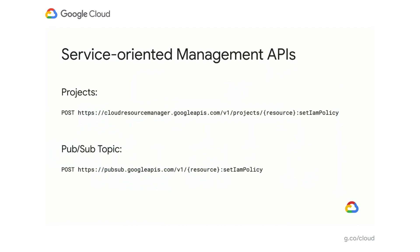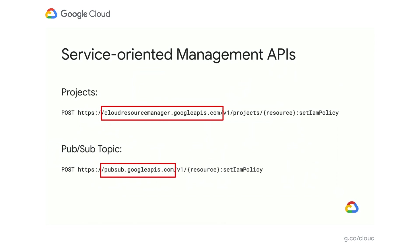Let's take a look at how you can set policies at different levels in GCP. The policies are retrieved or modified through APIs that are made available by the service related to where you want to set the policy. For example, setting policies on projects, folders, or the organization node is all done through the resource manager service. Or setting a policy on a particular PubSub topic would be done through the PubSub service. The method to modify IAM policies is called set IAM policy. Here you can see it exposed on the resource manager endpoint for projects or the PubSub endpoint related to topics.